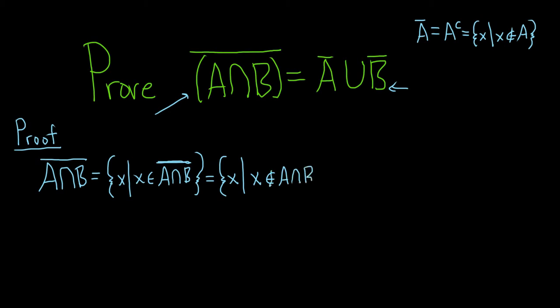So it's not in the intersection of the two, so it's not there. Okay, so it's not in the intersection. So this is equal to the set of all x such that, so if x is not in the intersection, right, what does that mean?